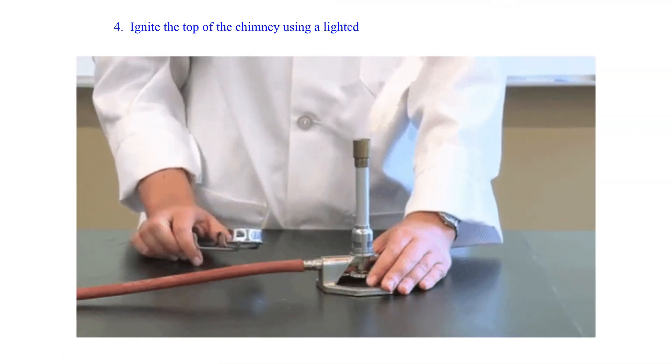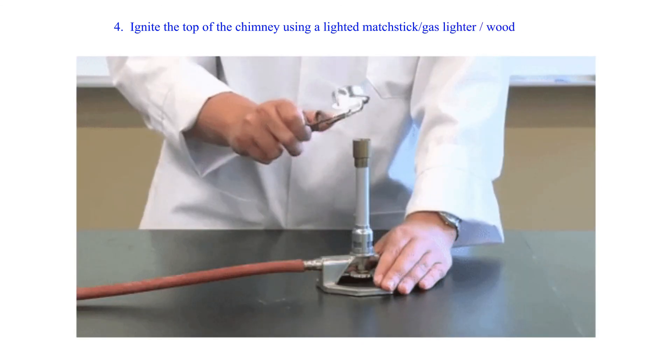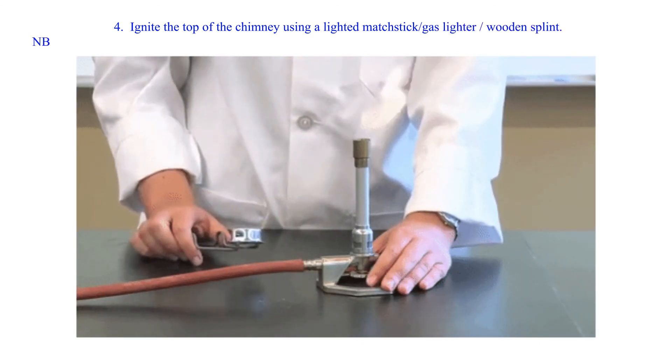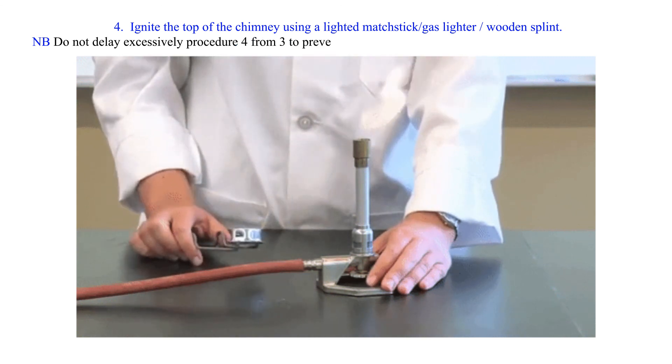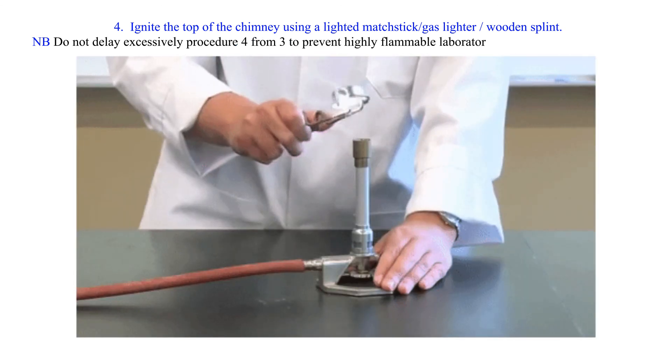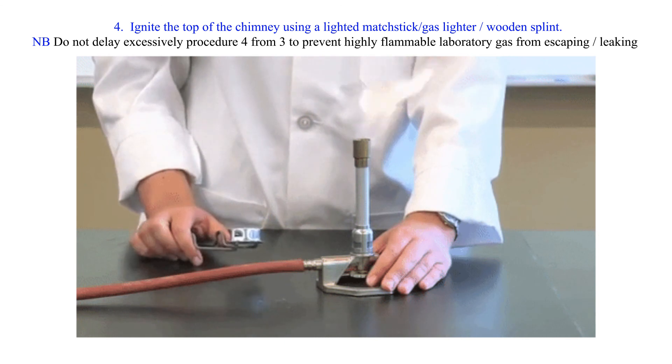4. Ignite the top of the chimney using a lighted matchstick, gas lighter, or wooden splint. Note: Do not delay excessively between step 3 and step 4 to prevent highly flammable laboratory gas from escaping or leaking.